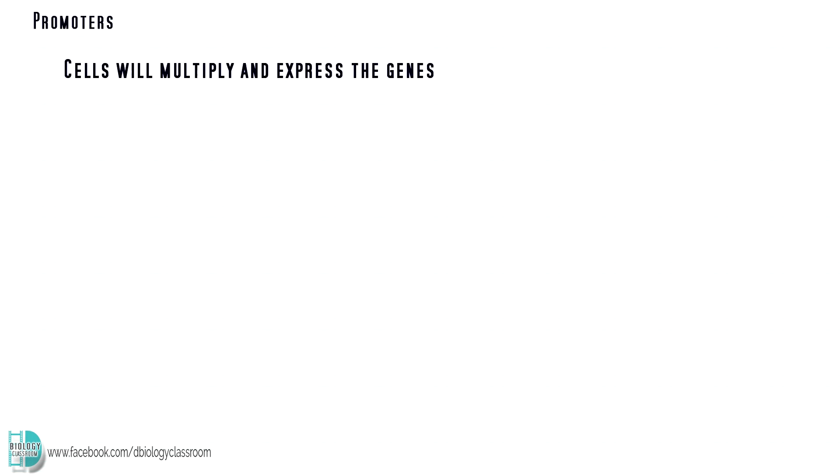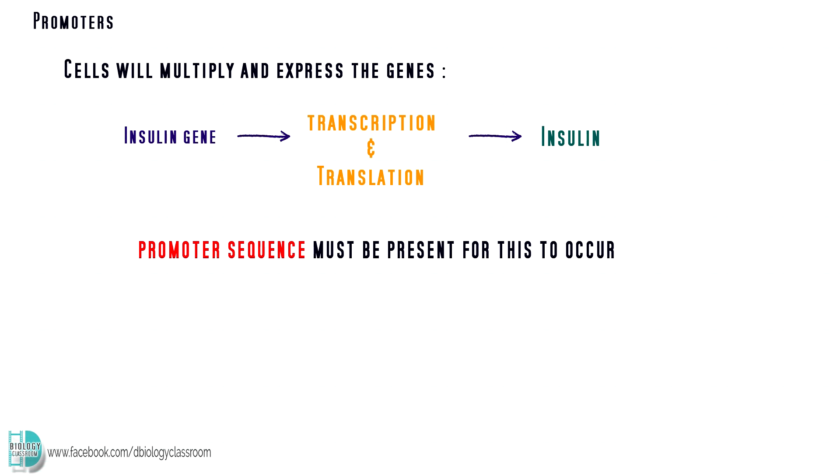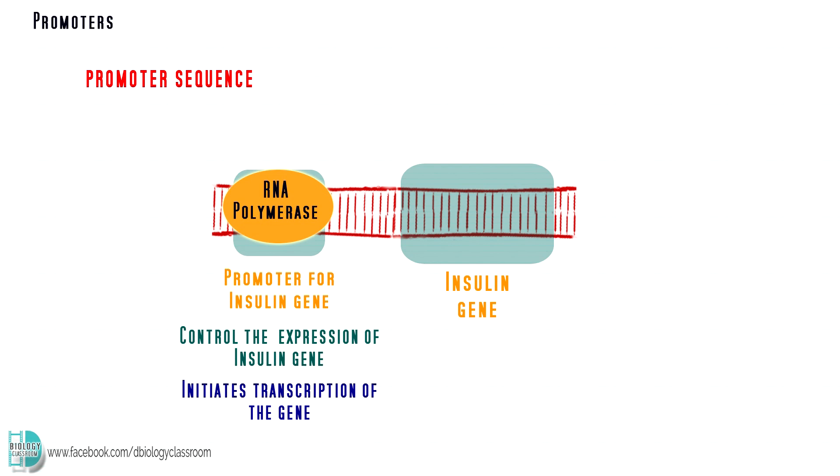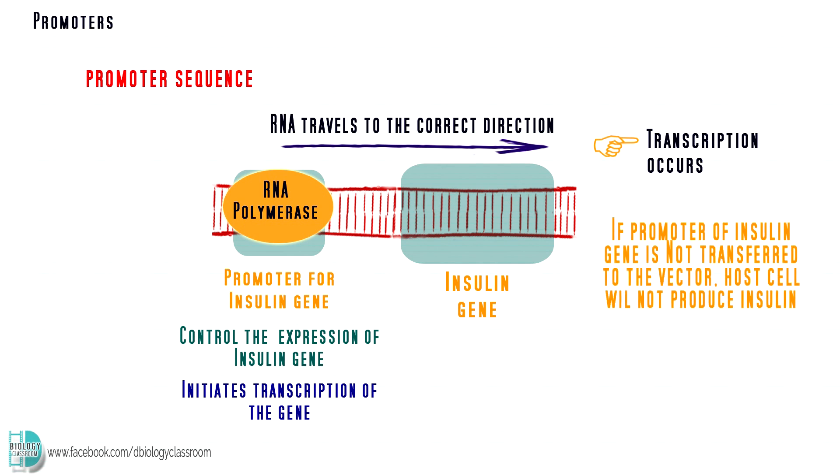When the cells grow and multiply, they will express the genes they contain. In order for a gene to be expressed in a cell, its promoter sequence must be present as well. Promoter is a segment of DNA usually occurring upstream from a gene coding region and acting as a controlling element in the expression of that gene. It initiates transcription of the genetic code. Without promoter, transcription of a gene cannot occur. Promoter binds and directs RNA polymerase to the correct transcriptional start site and thus permits the initiation of transcription. So, it is important that the promoter of insulin gene is transferred along with insulin gene itself during the process, or else we can't obtain the product in the end.